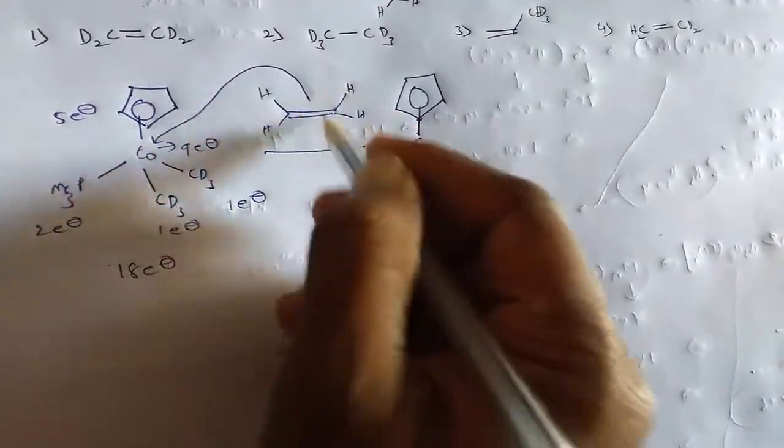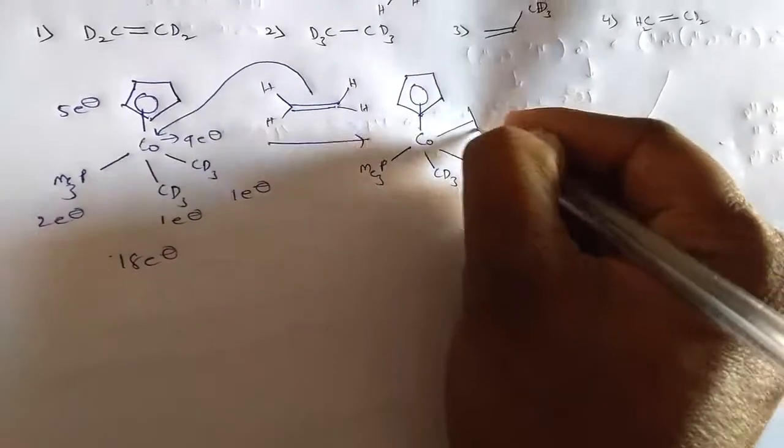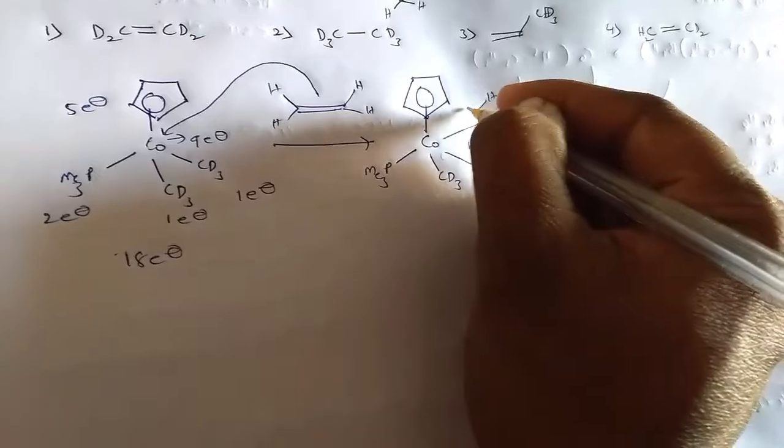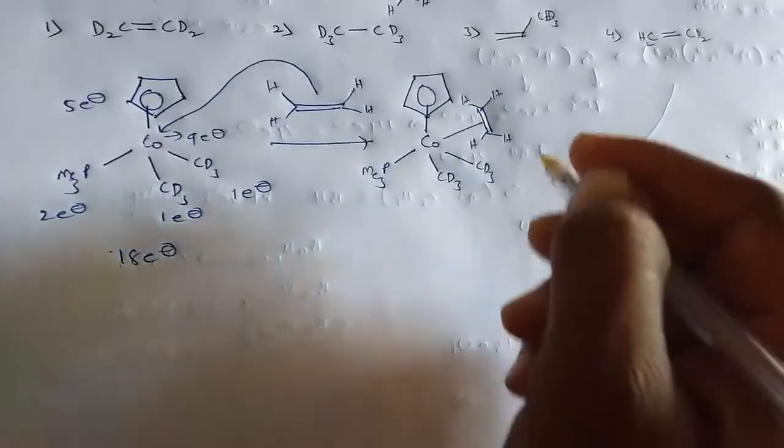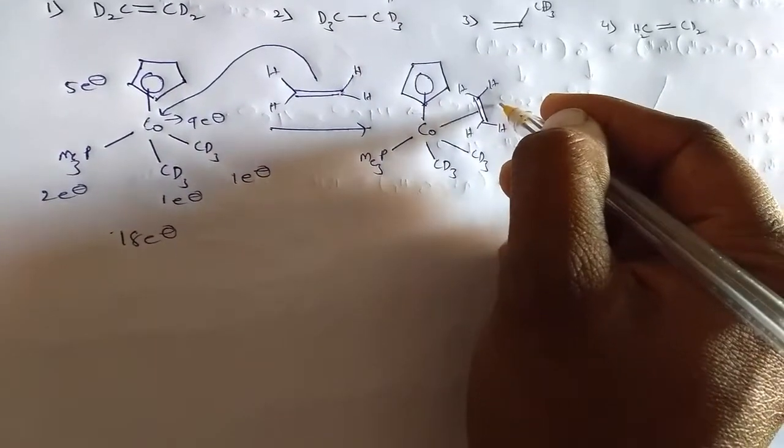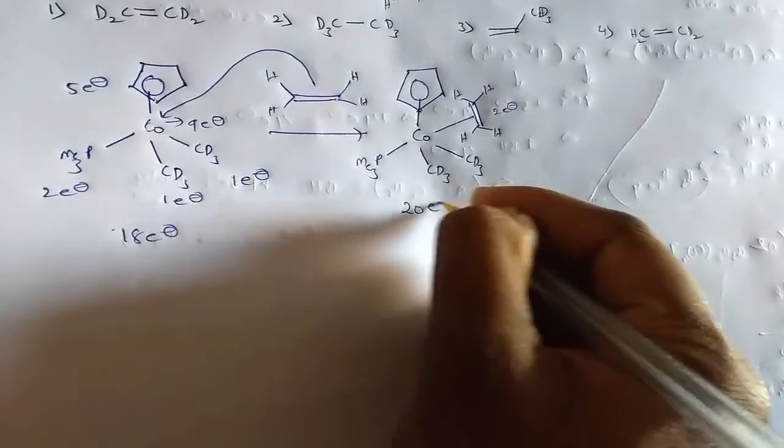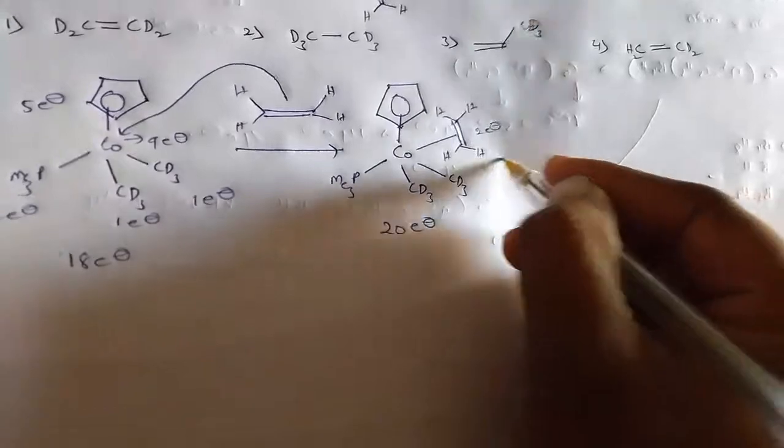This olefin coordinated with this cobalt. Now, this olefin gives, the ligand gives 2 electrons, that's why it gets 20 electrons and then further.